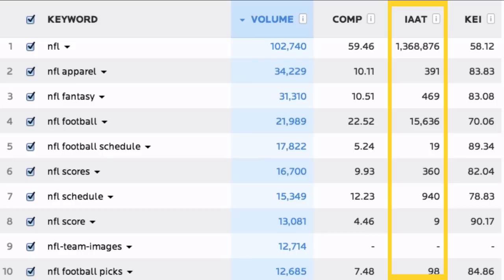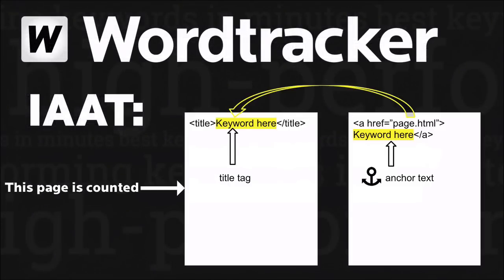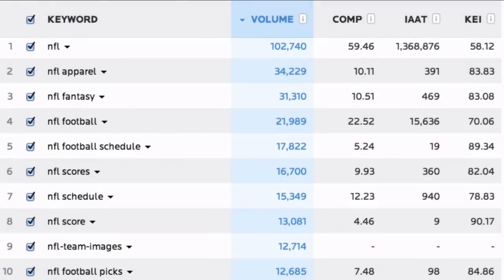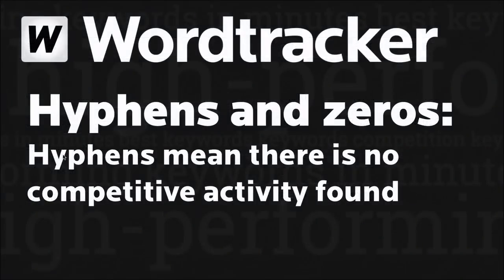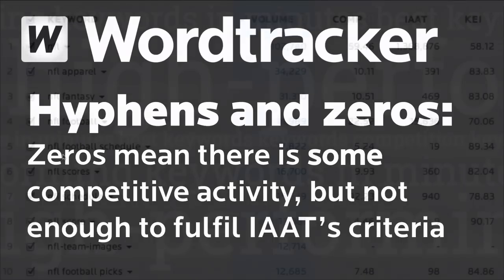IAAT, or In Anchor In Title, is where the competition figure is drawn from. It's basically the raw competition number, and it tells us how many pages have that keyword both in the title tag and in anchor text from an external domain, and it's provided to give you an extra level of detail when you're making your assessment. You might see hyphens or zeros in these two columns. A hyphen tells us that no pages have been found that appear to have been directly optimised for that keyword. A zero tells us that the keyword is found either in the title tag of a page or in anchor text pointing to it, but not both.